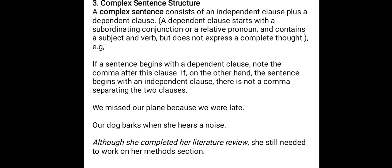If a sentence begins with a dependent clause, note that a comma follows that clause. On the other hand, if the sentence begins with an independent clause, there is no comma separating the two clauses. For example: 'We missed our plane because we were late.' Here 'we missed our plane' is the independent clause and 'because we were late' is the dependent clause. Since the sentence starts with the independent clause, the subordinating conjunction does not come with a comma.